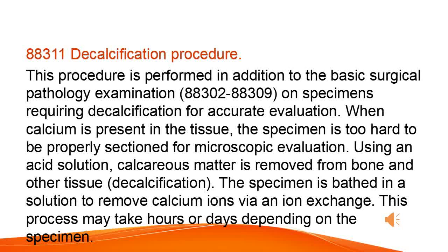Decalcification Procedure. This procedure is performed in addition to the basic surgical pathology examination, 88,302 to 88,309, on specimens requiring decalcification for accurate evaluation. When calcium is present in the tissue, the specimen is too hard to be properly sectioned for microscopic evaluation. Using an acid solution, calcareous matter is removed from bone and other tissue — decalcification. The specimen is bathed in a solution to remove calcium ions via an ion exchange. This process may take hours or days depending on the specimen.